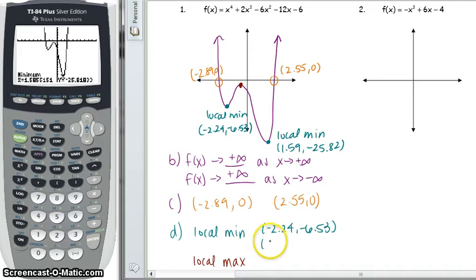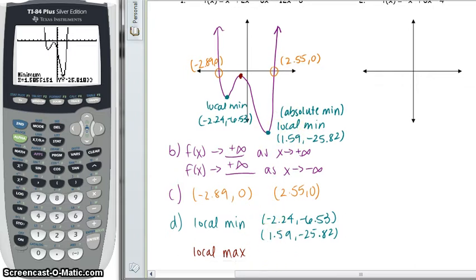All right, so that is our second local min. And what's unique about this point though is this min is the lowest point in this whole graph. It doesn't go any further down than this point, so this point is actually an absolute min because it's the lowest point in the entire graph. So I didn't ask for absolute min, but just so you know this would be an absolute min of this graph.